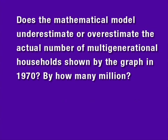Does the mathematical model underestimate or overestimate the actual number of multi-generational households shown by the graph in 1970, and by how many million?